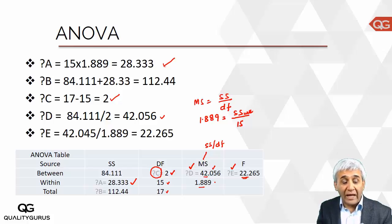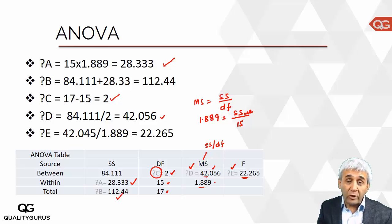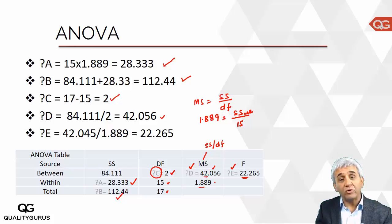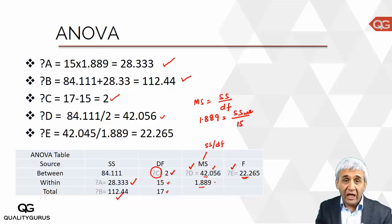Once you have calculated these two sum of squares — between and within — you can add them to get the total sum of squares, which is value B. So 84.11 plus 28.33 gives you 112.44. That's how you calculate the missing values in an ANOVA table.